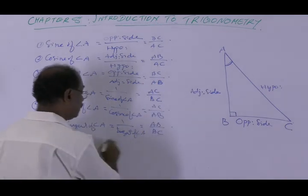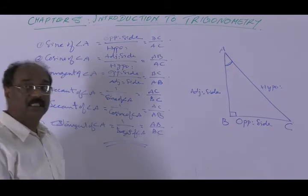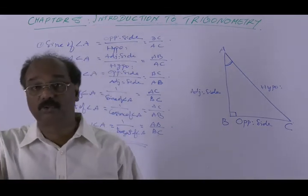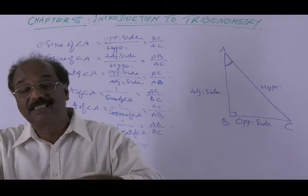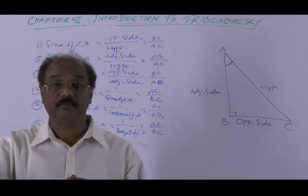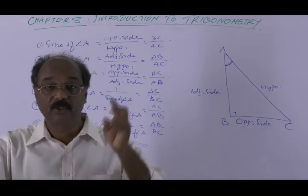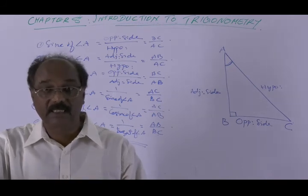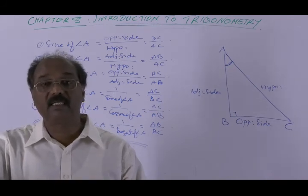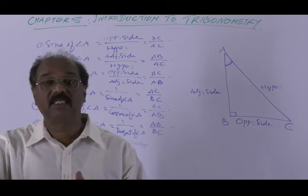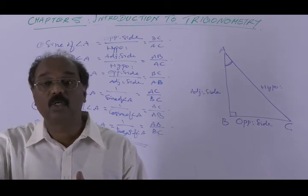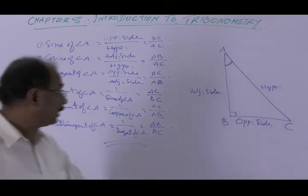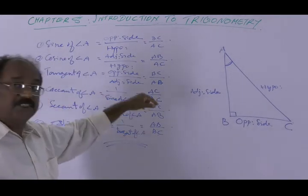So these are the six trigonometric ratios with respect to angle A: sine of angle A, cosine of angle A, tangent of angle A, cosecant of angle A, secant of angle A, and cotangent of angle A. These are the six ratios.